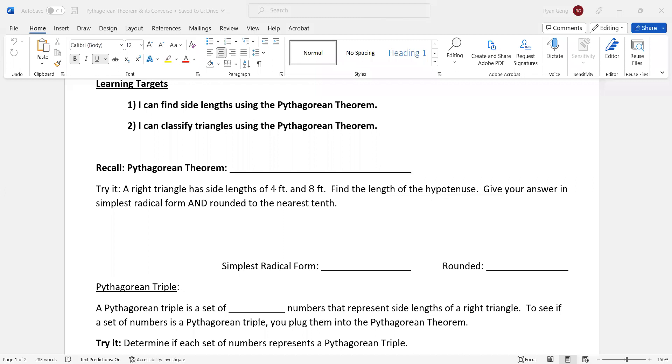So recall real quick what the Pythagorean Theorem is. It is A squared plus B squared equals C squared. Just a reminder, it works with right triangles. A right triangle has side lengths of 4 feet and 8 feet. Find the length of the hypotenuse. Give your answer in simplest radical form and round it to the nearest tenth. The legs are A and B, so I gave you those and we're looking for the hypotenuse for C.